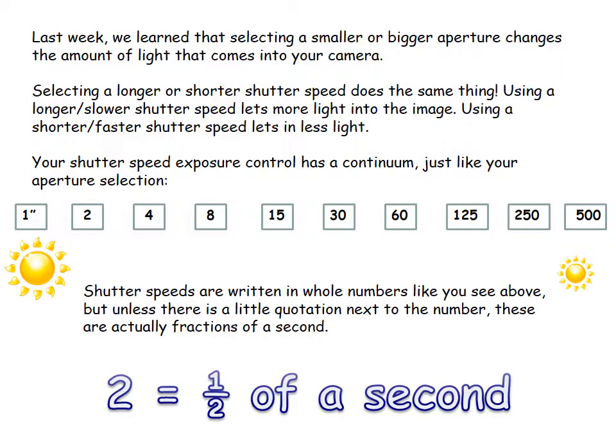Last week we learned that selecting a smaller or bigger aperture changes the amount of light that comes into your camera. Selecting your shutter speed does the same thing. Longer or shorter shutter speeds will either let less light or more light into your image. Shutter speeds are written in whole numbers unless they have a little quotation mark next to the number. If the quotation mark is there, that means it's a full second — one with quotes is one second, ten with quotes is ten full seconds, all the way up to thirty seconds.